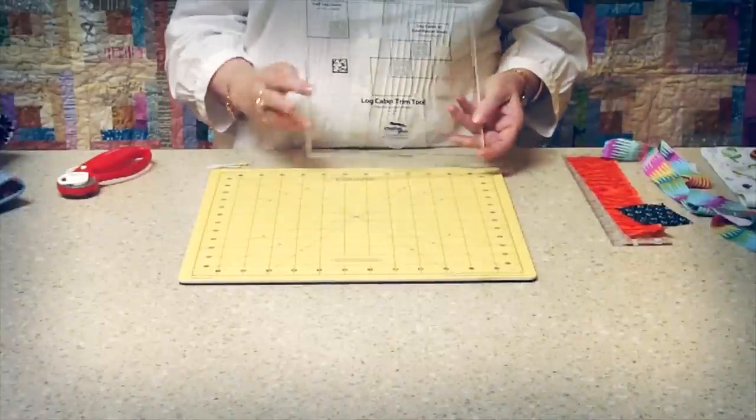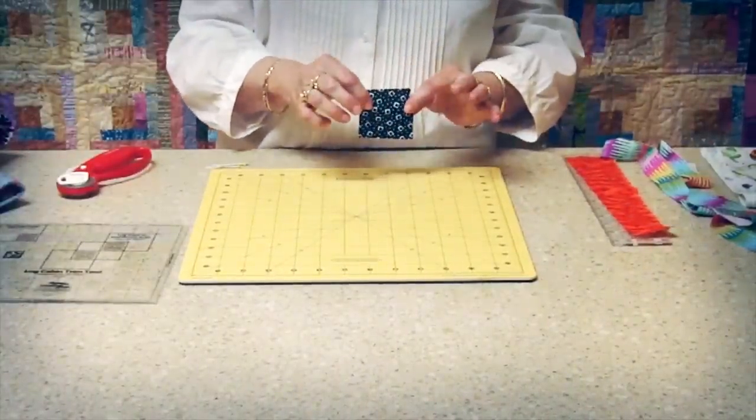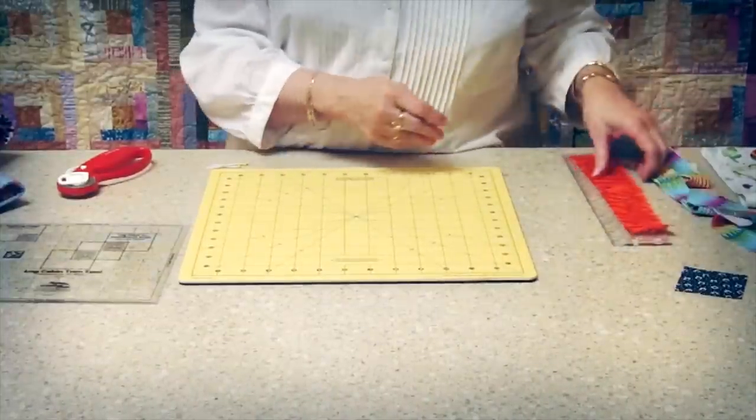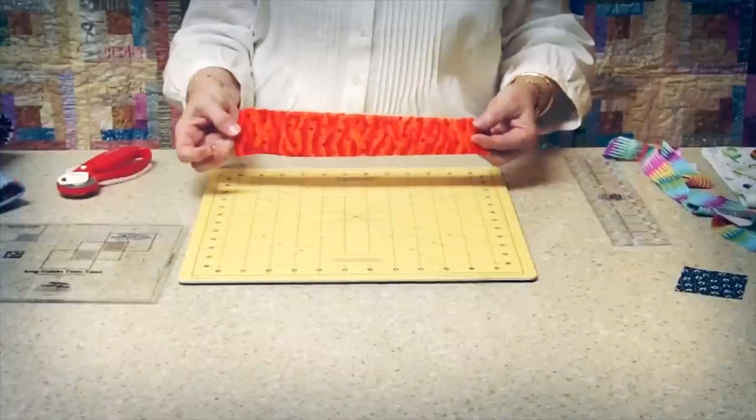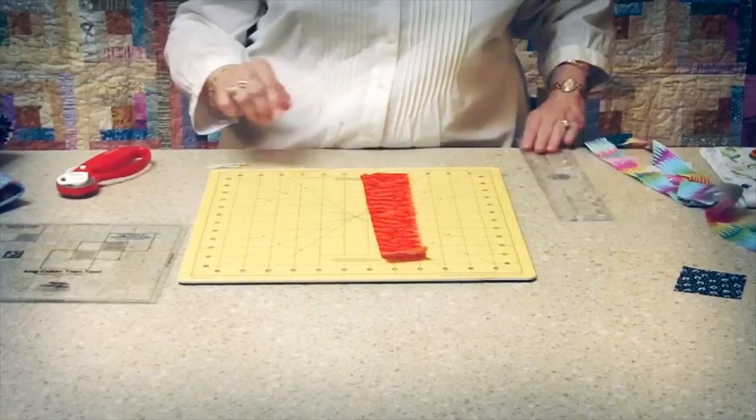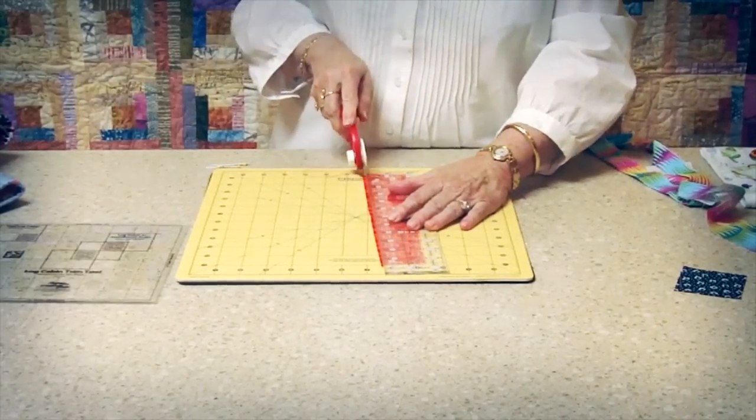Let me show you how the trim tool works. You only need to precision cut one piece for your block and that is the center square, a two and a half inch square. The strips themselves can be any width, they can be a varied width, they can even be ripped. They only need to be rotary cut to a precise width on just one side.